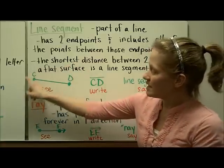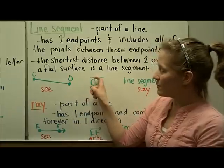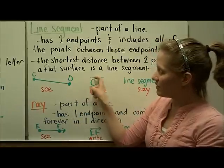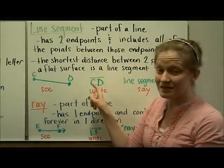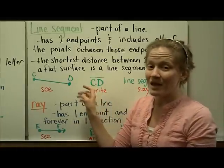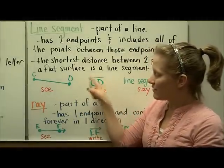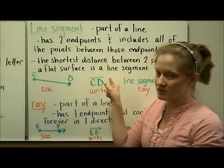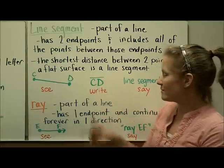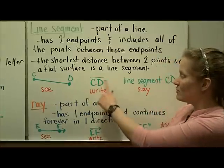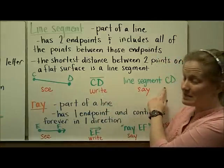To name this line segment, we would write a line with C and D. Notice that it's different from a line because it does not have arrows on either side. So this represents the line segment, and we would read this as line segment CD.